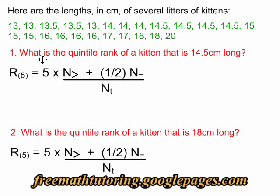The first question is asking, what is the quintile rank of a kitten that is 14.5 centimeters long? Here's the quintile formula. R5 stands for quintile rank, and that is our unknown. That's what we're looking for right now.